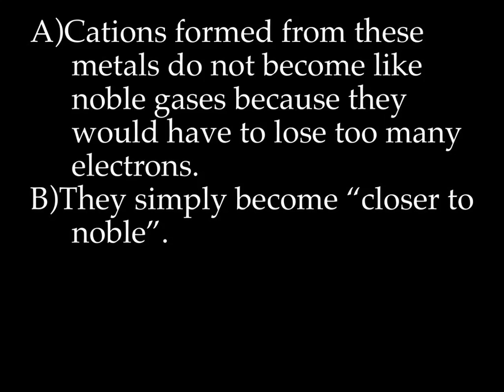There's a really sad story about these guys — groups 3 through 12 and 14 through 16. Cations formed from these metals can never become like noble gases. They'd have to lose way too many electrons, so they can never fulfill their dream. They simply become closer to noble — they lose 1, 2, or 3 electrons and try their best, but they never get there. Because of that, you can't actually predict what the ion is going to become, since it never becomes like a noble gas.